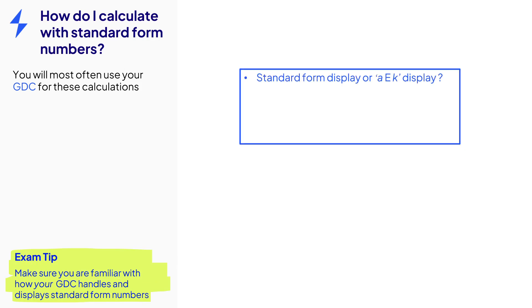For example, does it use standard form display? Or does it use an AEK display? Like this. So that number there is the calculator's way of saying 1.25 times 10 to the power of negative 12. And that number there is the calculator's way of saying 1.568 times 10 to the power of 16.